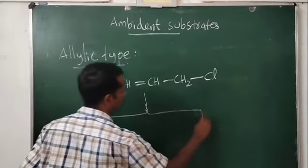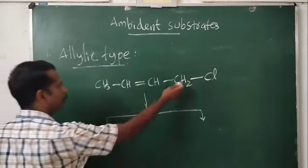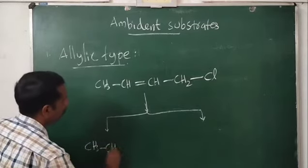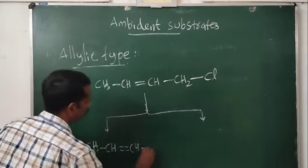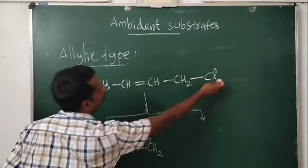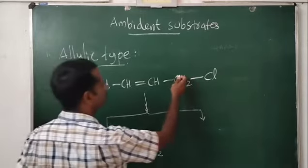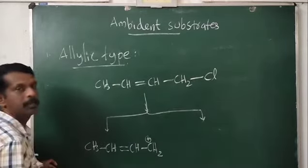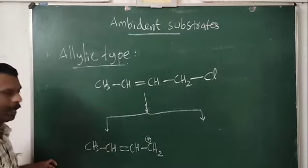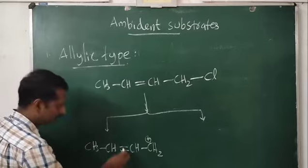There are two possibilities for the formation of a carbocation. The first is the normal carbocation: CH₃–CH=CH–CH₂⁺, formed by the removal of the halogen leaving group from this carbon. Therefore the nucleophile can attack on this carbon.